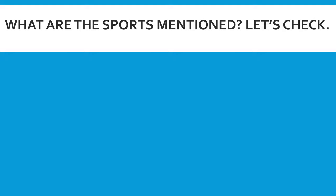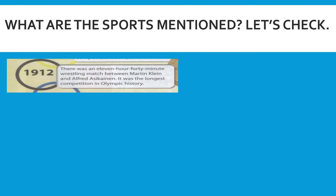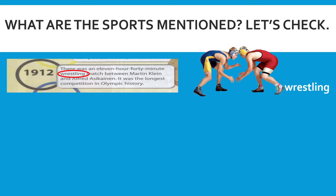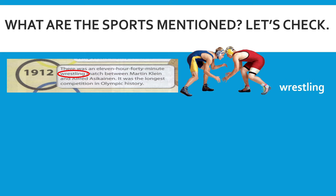What are the sports that were mentioned in the text? I bet you already have the answer. Now let's try to cross-check together. There was an 11-hour 40-minute wrestling match between Martin Klein and Alfred Asikainen — it was the longest competition in Olympic history. The sport mentioned here is wrestling.